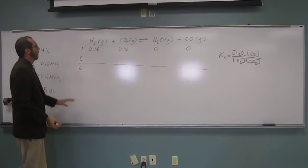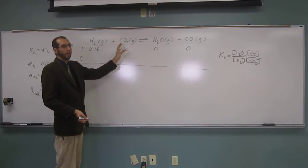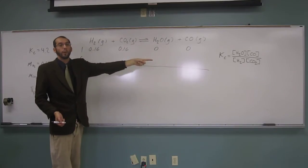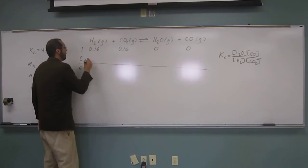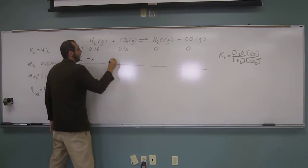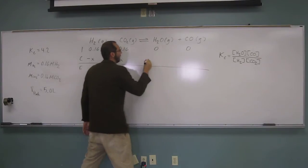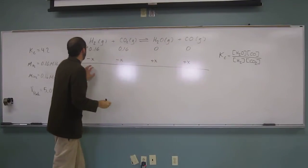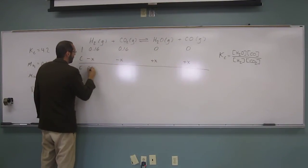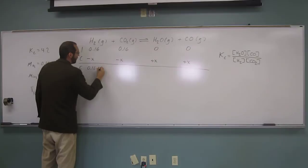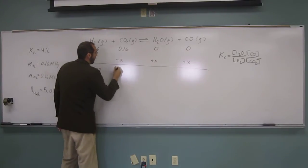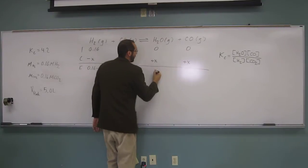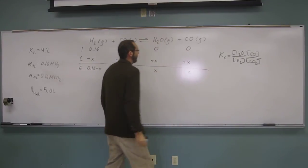The change, of course, well, since we only started with reactants and no products and this is in equilibrium, it's going to be pushed that way. Okay, so that means minus x there, minus x there, plus x there, plus x there. Okay, so what are we going to get at equilibrium? 0.16 minus x, 0.16 minus x, x, and x.